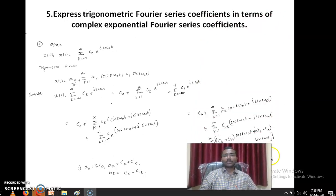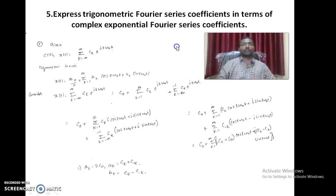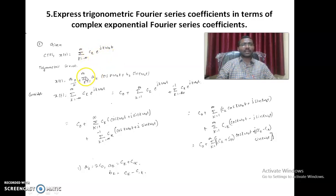In the next question, we are asked to find the trigonometric Fourier series coefficients in terms of complex exponential Fourier series coefficients. The complex exponential series is x of t equals summation over k from minus infinity to infinity of c k e power jk omega naught t, and the trigonometric series has a DC term, an even part, and an odd part. We have to express a k and b k in terms of c k, so let us consider this expression.